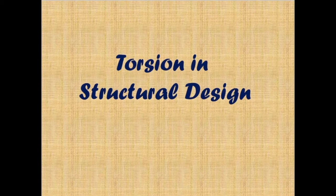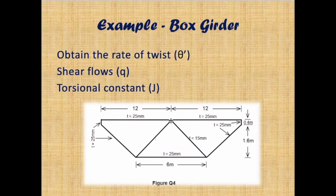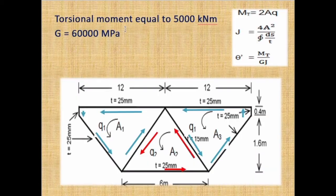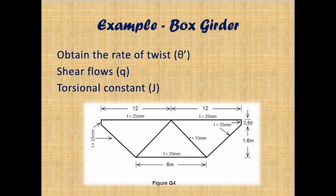Hello everyone, it's Deluxe and Victor. Today I'm going to do an example in torsion and structural design. In this example, a box girder is given with the length and thickness provided. The data includes a torsional moment of 5,000 kilonewton meters and G of 60,000 megapascal. I'm going to show you how to find the rate of twist theta dash, shear flow Q, and torsional constant J.